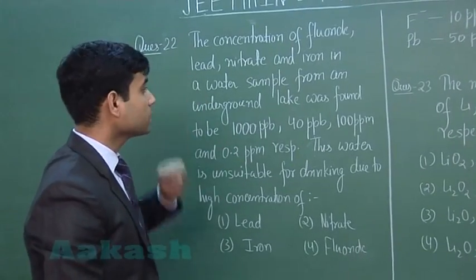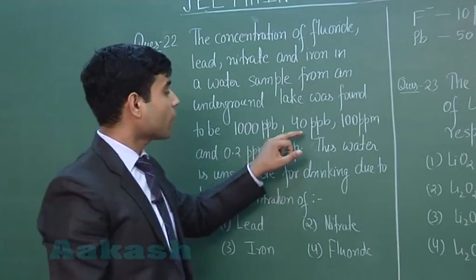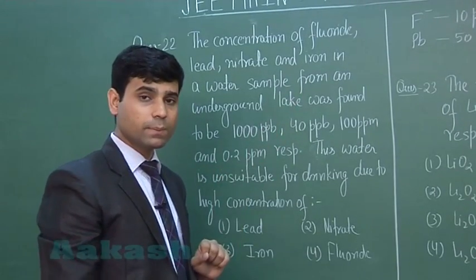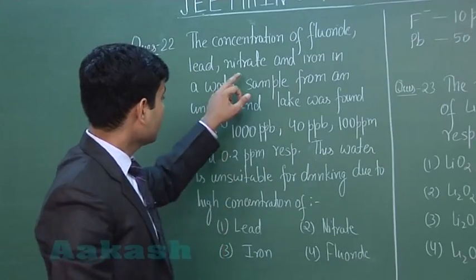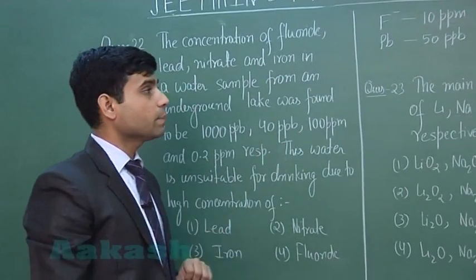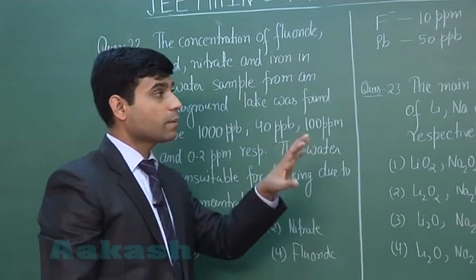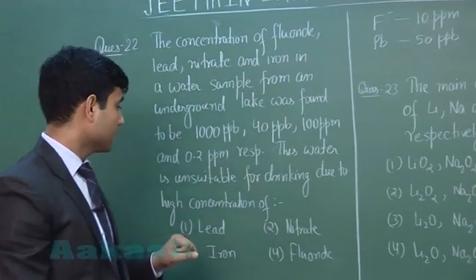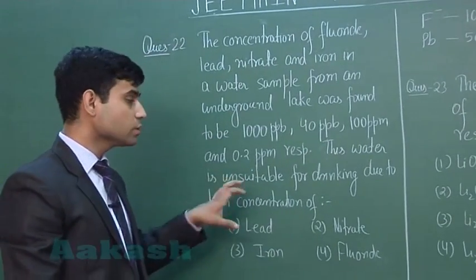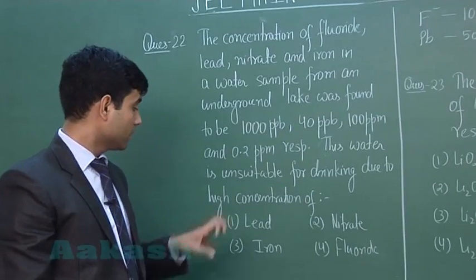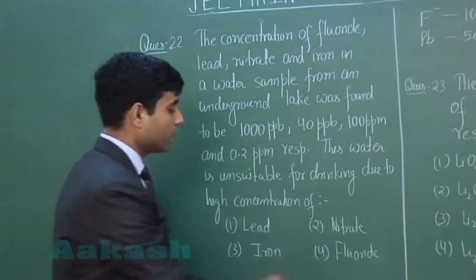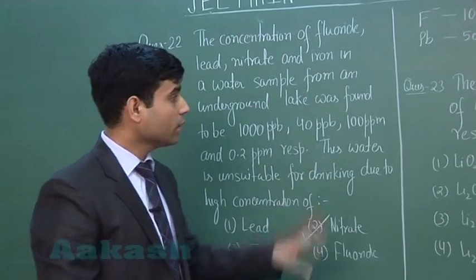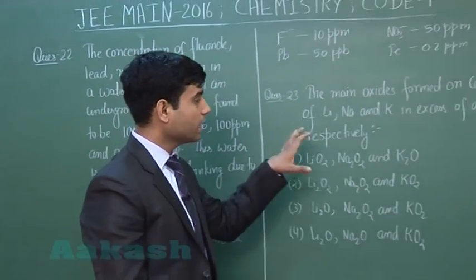For lead, the sample has 40 ppb but the prescribed limit is 50 ppb, so lead is within limits. For nitrate, the sample has 100 ppm which is above the prescribed limit of 50 ppm. So the correct answer is that this water is unsuitable for drinking due to the presence of excess nitrate.